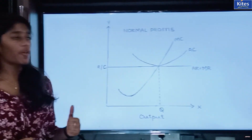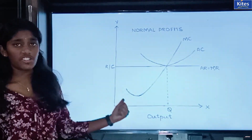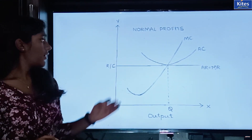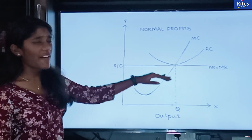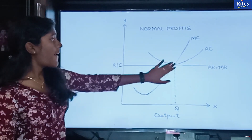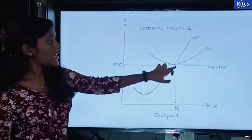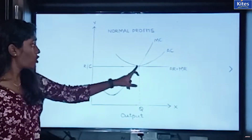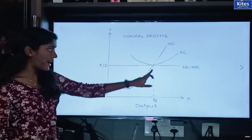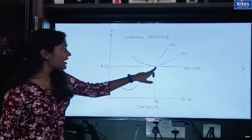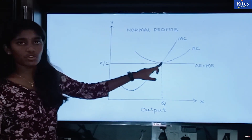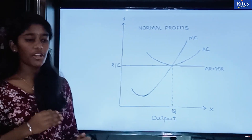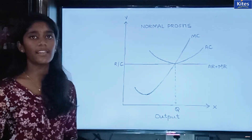Now we are going to learn about normal profits. This is the condition where your revenue and cost are both equal. This is your price, average revenue, and marginal revenue. Where the MC curve equals your MR curve, that is your equilibrium point. At the equilibrium point, the average revenue equals your average cost. That means your revenue is equal to your cost — what you are spending, you are getting in return. So there is no profit, no gain — that is the concept of normal profits.